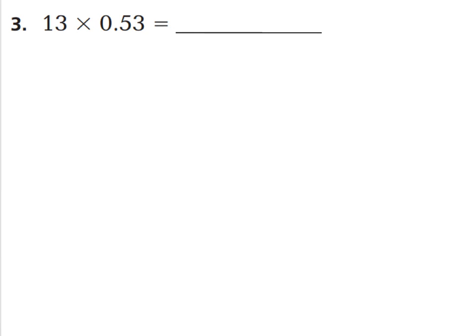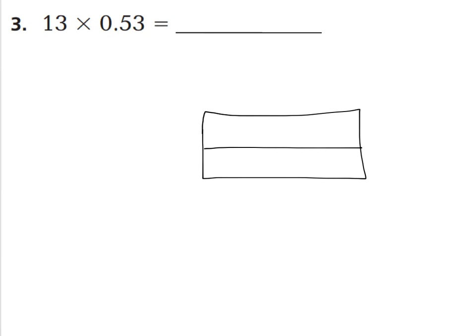Let's look at question 3. If you don't have room on your page, you can do this on notebook paper and bring it to class tomorrow to show your work, or write small to fit it in that spot. We're going to break up 13 wholes into one 10 and three 1s. Now let's look at 53 hundredths: I have 5 tenths in my tenths place and 3 hundredths. Now we're ready to multiply.